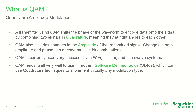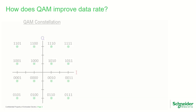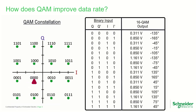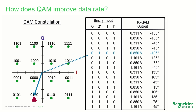QAM lends itself very well to use in software-defined radios, or SDRs, which can use quadrature techniques to implement virtually any modulation type. This is a graphical example of a typical 16-QAM transmission — both the amplitude and phase of the waveform change to point at different locations in the QAM constellation. As there are 16 locations, this allows a single change to carry 4 bits of data.